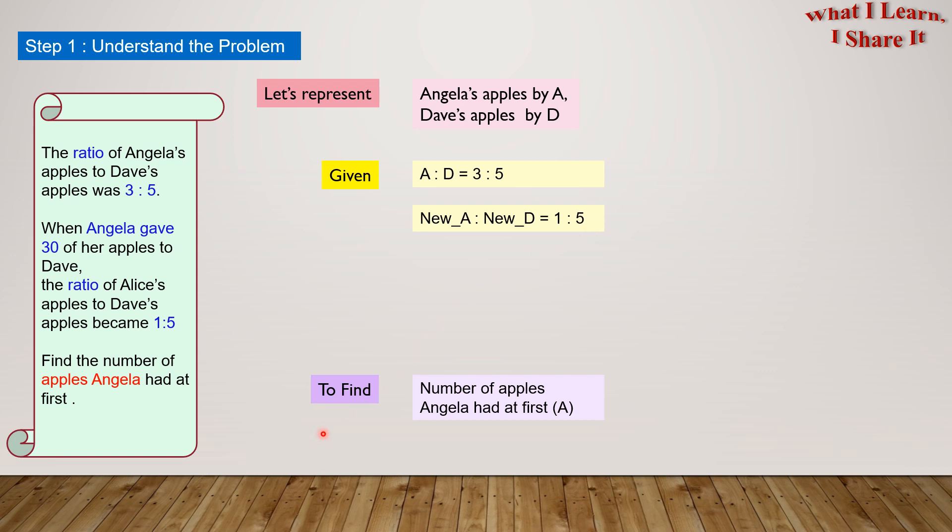And we have to find the number of apples Angela had at first. This means we also have to find A.